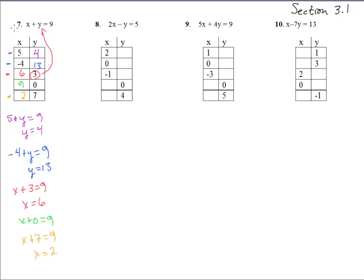Number 8. Let's do this right here. Now again we're sticking in the 2 up there for the x. So we get 2 times 2 minus y equals 5. So that's 4 minus y equals 5. Subtract 4 from both sides, minus y equals 1. So that means y equals a negative 1.